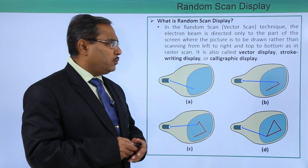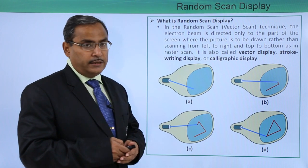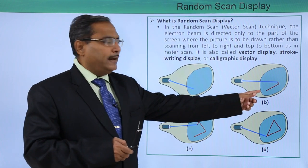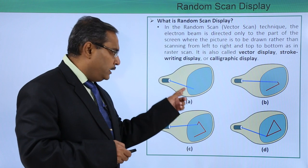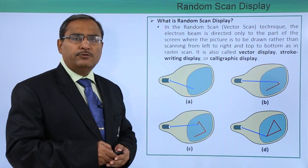It is also called vector display, stroke-writing display, or calligraphic display. Here you can find where this particular line is going to get drawn. Accordingly, this electron beam is moving. In this way it is drawing one triangle.